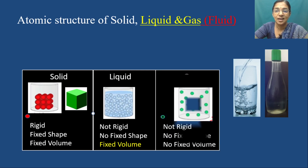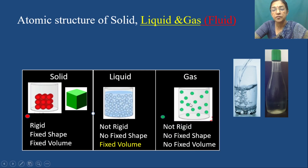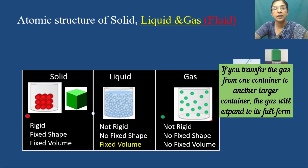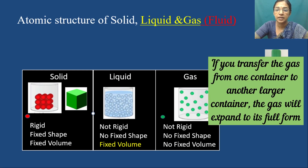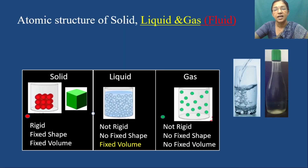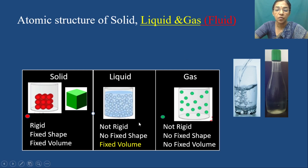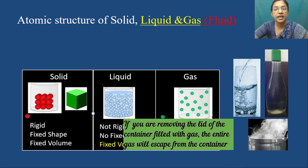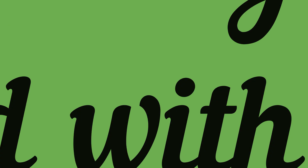In gases, molecules are widely spaced and cohesive forces are very small compared to liquids, so gas molecules are not rigid, have no fixed shape, and no fixed volume. If you transfer gas from one container to another, it expands to fill the entire container. The major differences between liquid and gas: liquid has a free surface but gas does not; liquid has a fixed volume whereas gas does not. For a gas, the volume equals the volume of its container. If you remove the lid of the container, all the gas escapes.